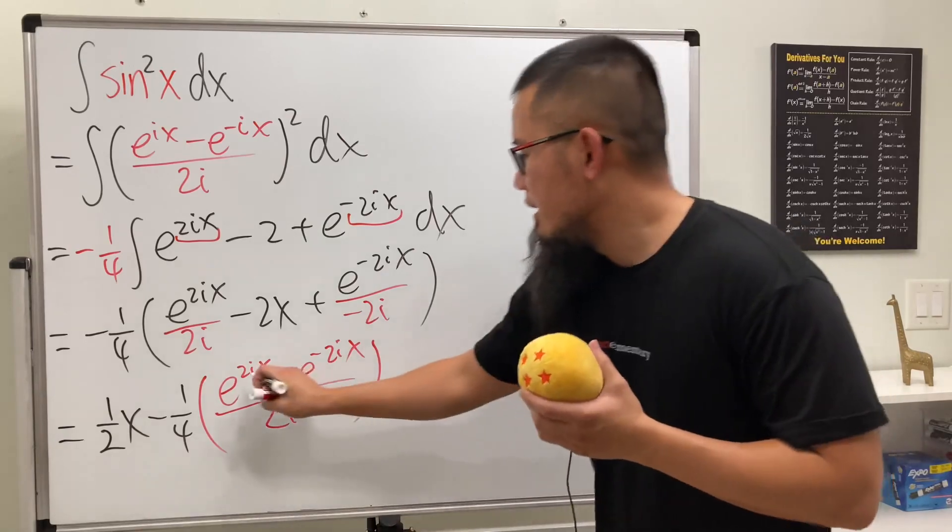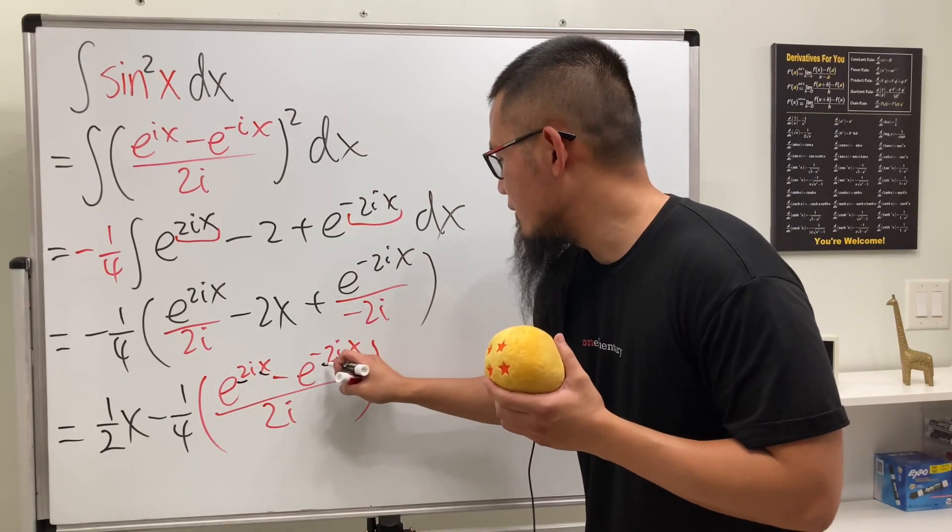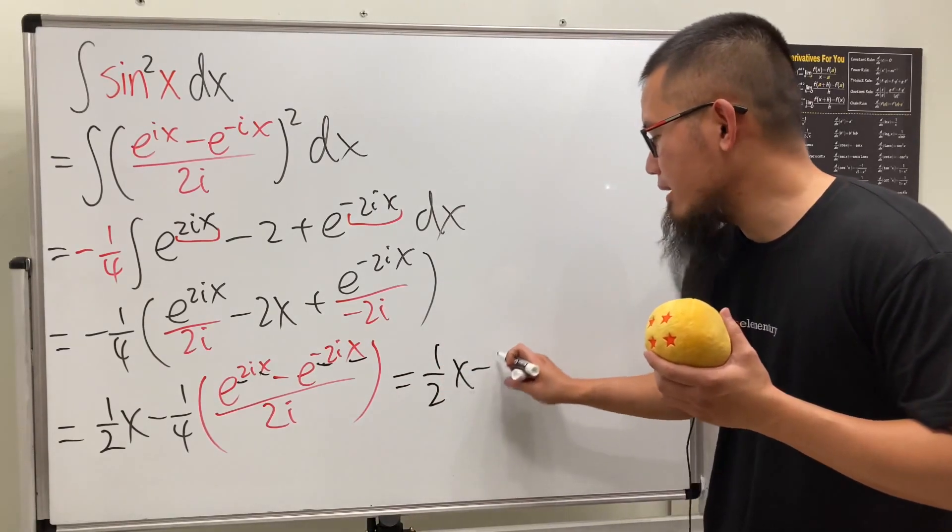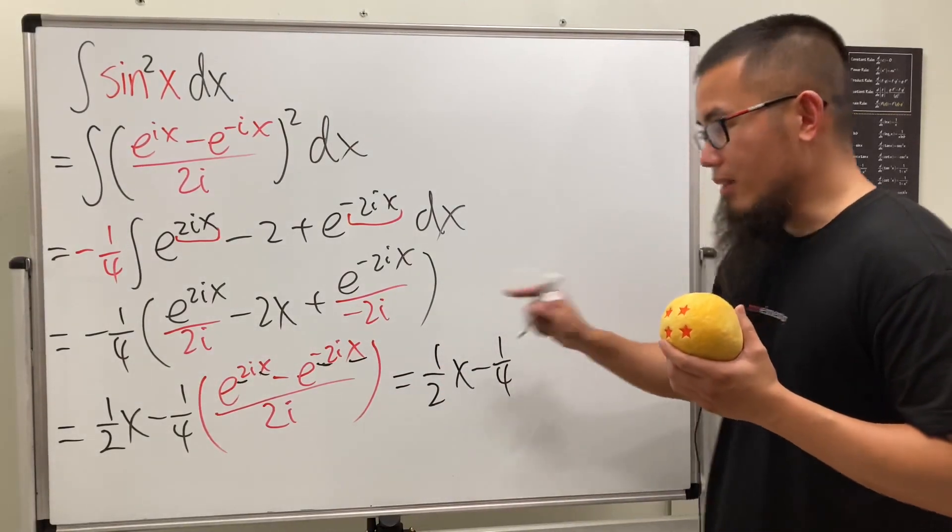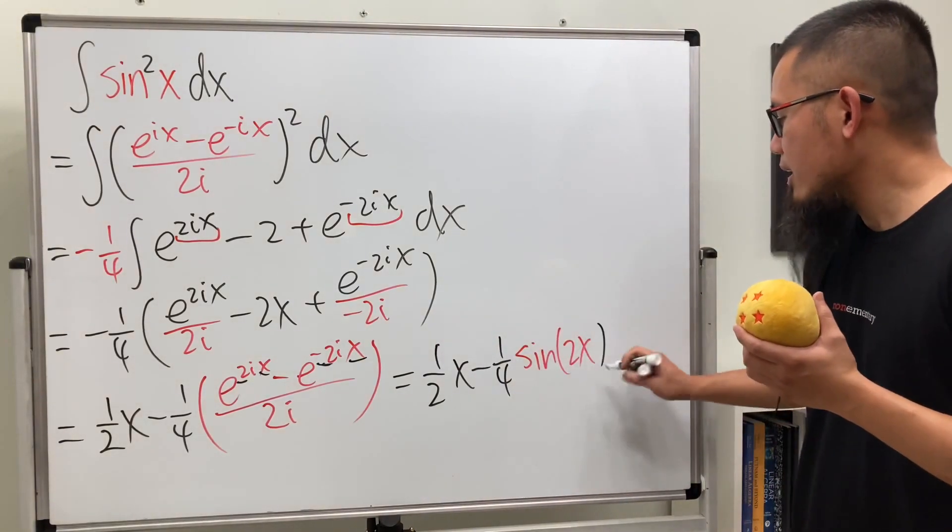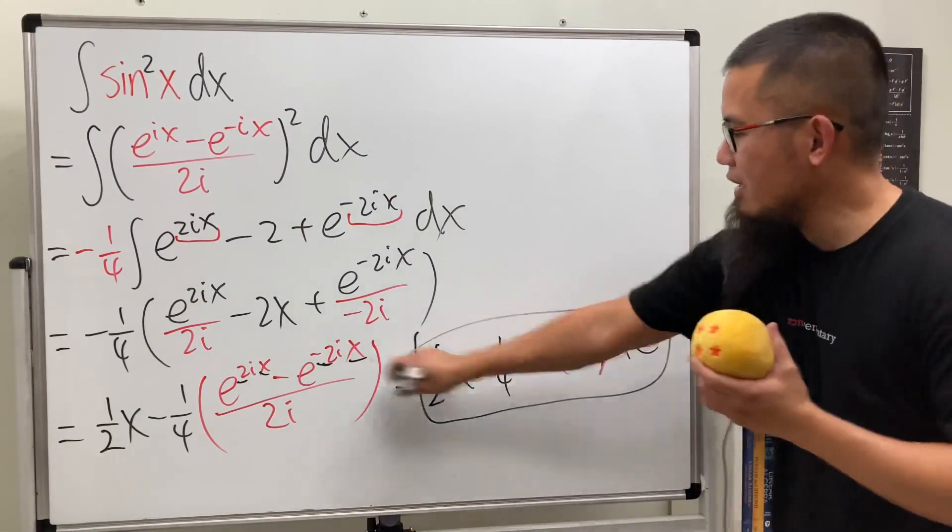As you can see here, we have 2x and here we have negative 2x. As you can see, this right here is just going to be 1 over 2x minus 1 over 4, and then the red part is actually just the same as sin of 2x, and then we are done. So put on the plus C, and this is it.